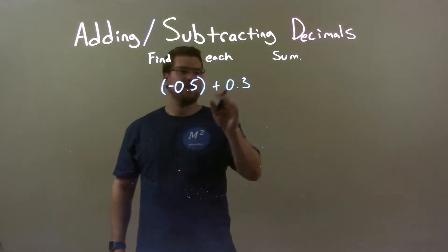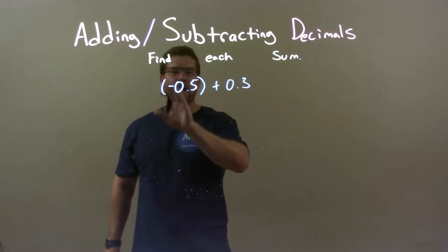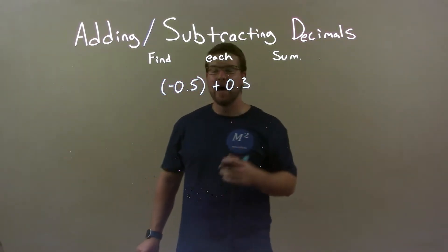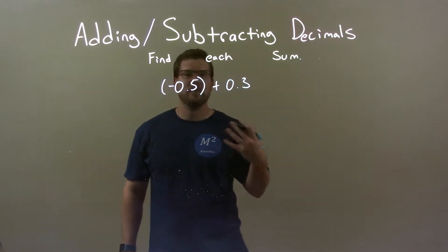Well, I have negative 0.5 plus 0.3. I know that this negative is more negative than when this 0.3 is positive, right? So my overall answer is going to be negative.